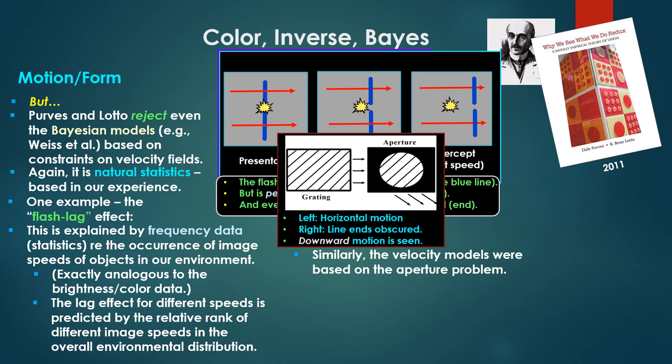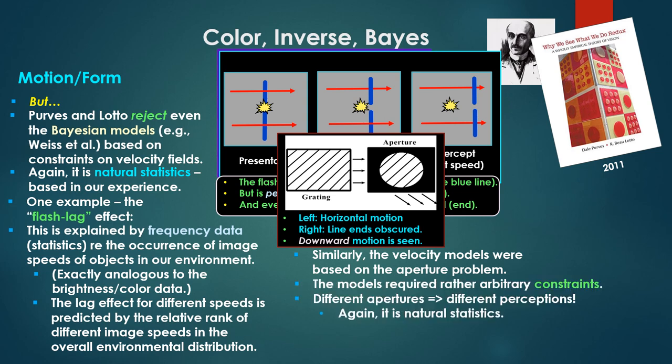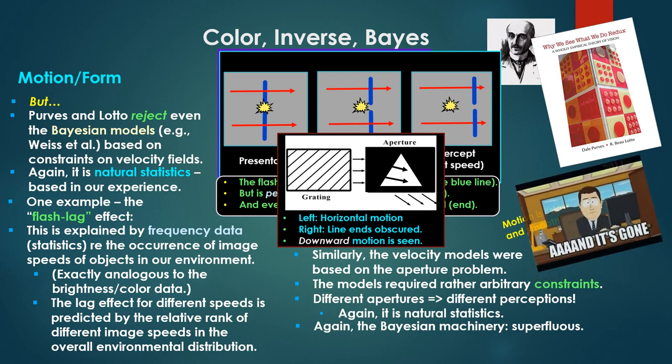Similarly the velocity field models, a la Weiss et al., were based on what's called the aperture problem. In the aperture problem there, we have a grating moving horizontally to the right, but as it passes through the aperture, only a downward motion of those lines is seen, downward and to the right. So the models that predicted this type of motion required again rather arbitrary constraints like motion is slow and smooth. Have some reasonability about them, but the problem is different apertures create different perceptions. A narrow slit aperture like the one there, we get a different motion yet. The triangular with different motion yet. So again different apertures, different perceptions. Again the only way to predict this naturally is natural statistics.